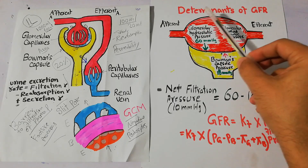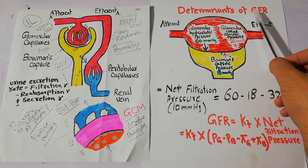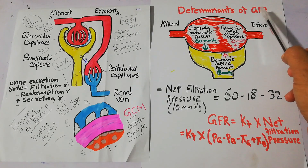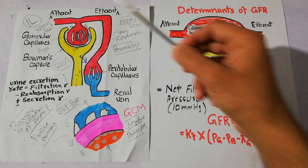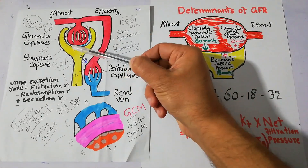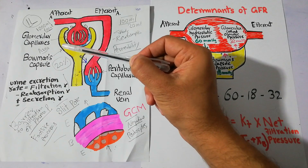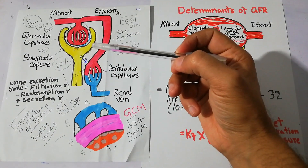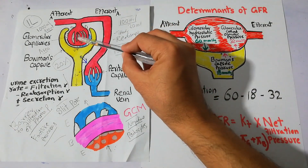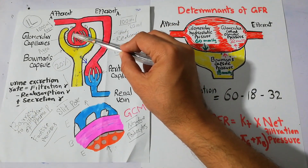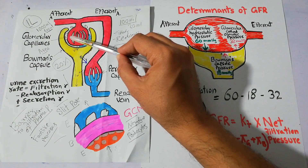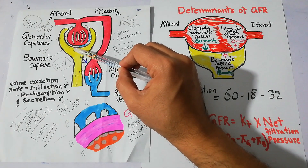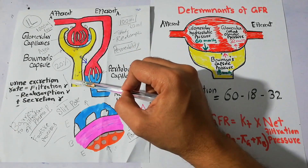Today we are going to talk about determinants of GFR, or glomerular filtration rate. GFR is the rate at which filtration is occurring. Filtration is basically the first step in urine formation. The filtrate, or fluid coming out of the glomerular capillaries into the Bowman's capsule, then moves through the nephron tubules and forms the urine.